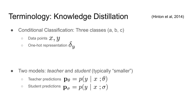Before we talk about Whisper, let's review some of the key terminology in knowledge distillation. To make things simple, let's assume we're doing a three-class classification problem. There are classes A, B, and C. We'll condition on some input X and have to make a prediction Y. We'll represent Y as a one-hot vector, delta sub-Y, that points to one of these three classes. We'll also start with two different classifiers.